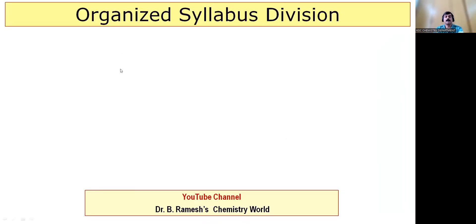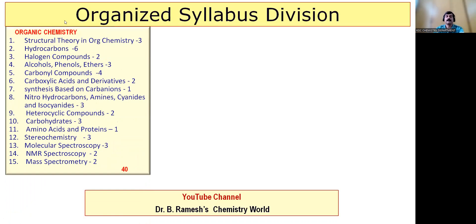Now look at the chapter wise weightage. Structural theory, organic chemistry and spectroscopy, including spectroscopy, about 40 marks are coming.